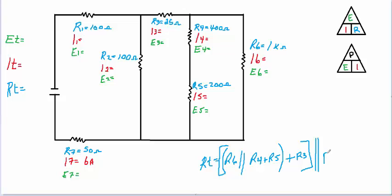Resistor 2 goes right there, giving us one value of resistance from that point all the way back. Now we can see that resistor 1 is in series with that value of resistance, and resistor 7 is also in series with it. So I'm going to put another set of brackets here and add on resistor 1 plus resistor 7 on the end — and there's your RT equation.